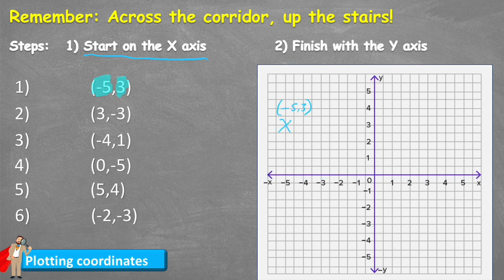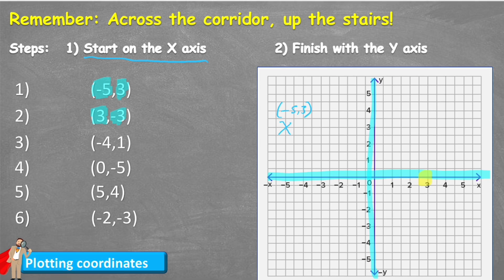Okay, let's do number 2, and the X axis is a positive 3. So I'm going to go along my X axis until I see my positive 3, and on my Y value we have a negative 3, and negative 3 sits just here.